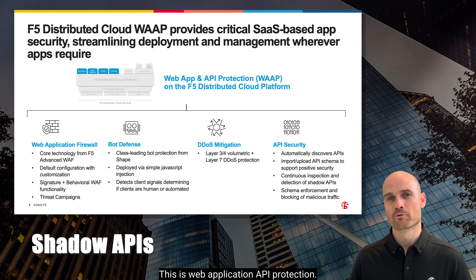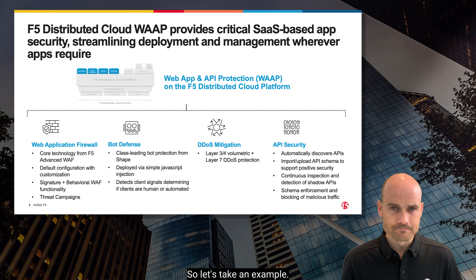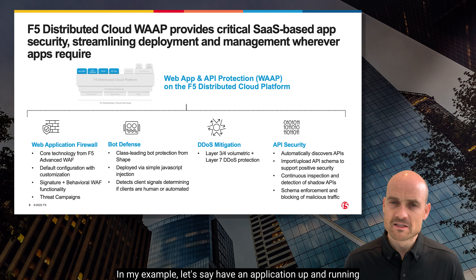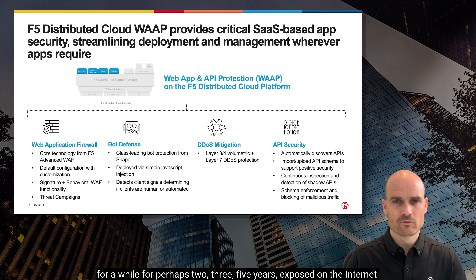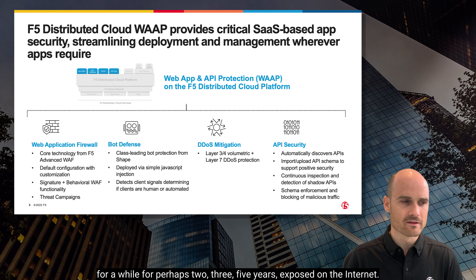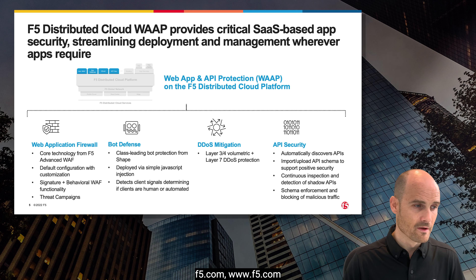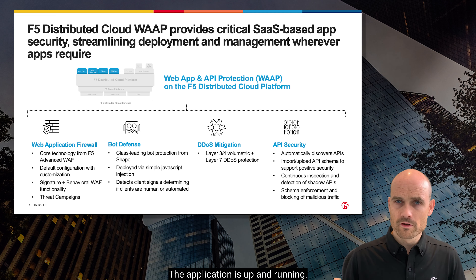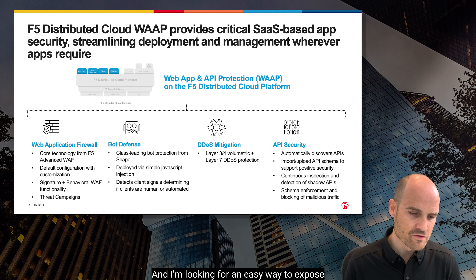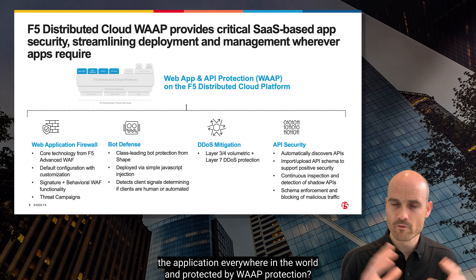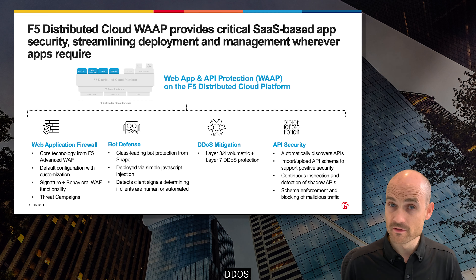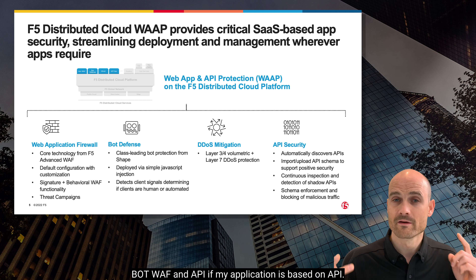Let's take an example. Let's say I have an application that has been up and running for two, three, or five years — exposed on the internet, www.f5.com. This application is up and running, but it's not protected. I'm looking for an easy way to expose the application everywhere in the world and protect it with WAF protection, DDoS, and API security if my application is API-based.